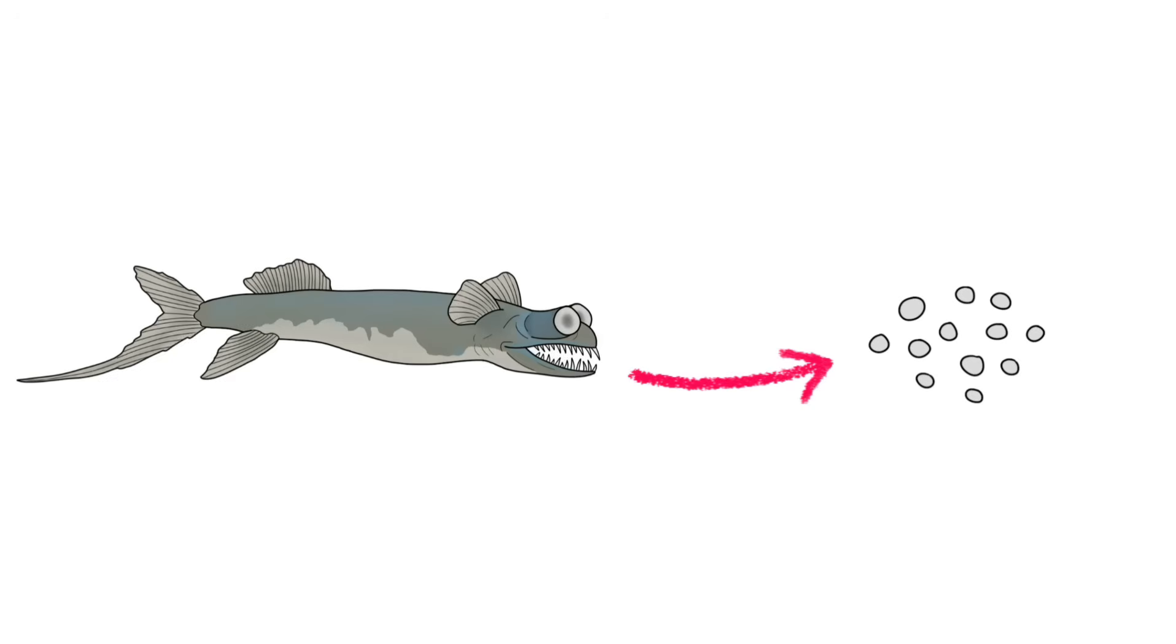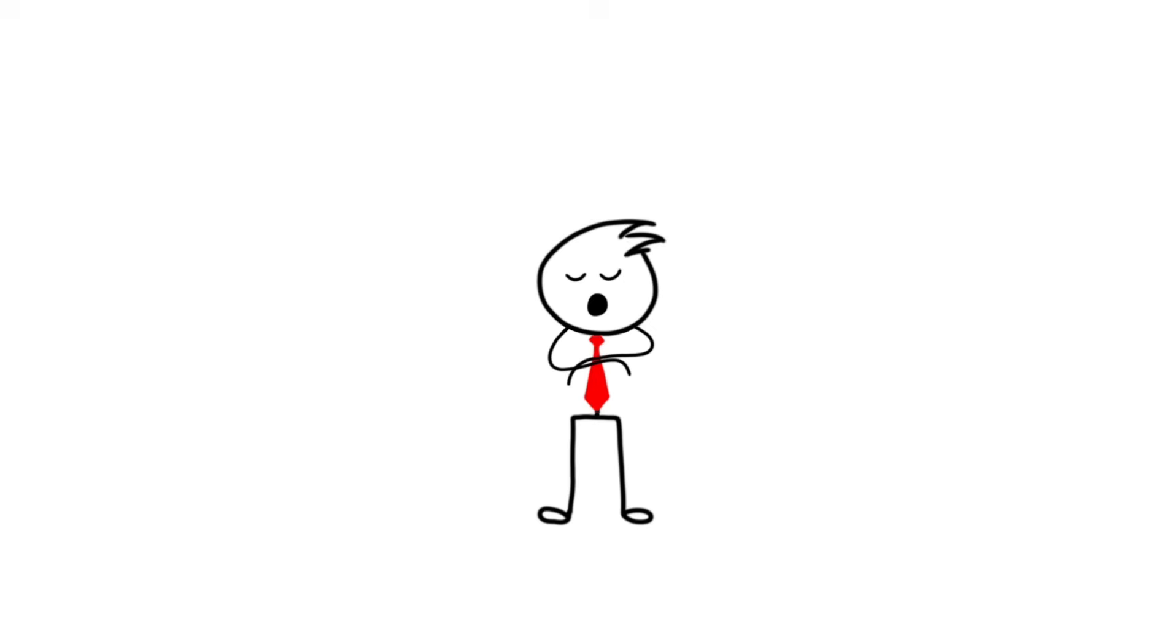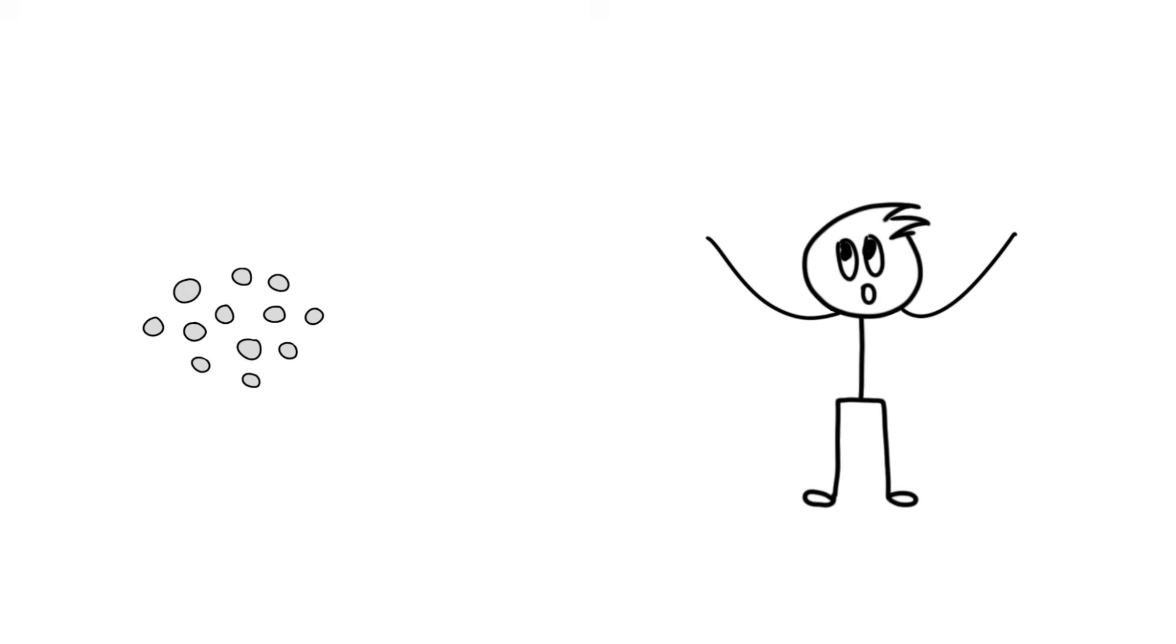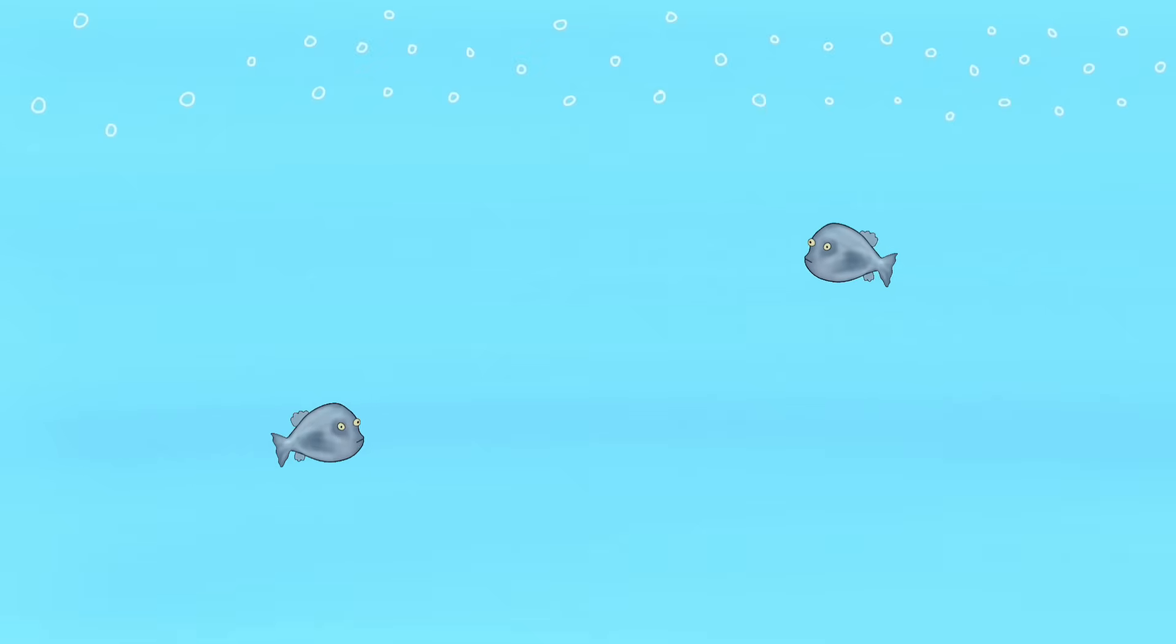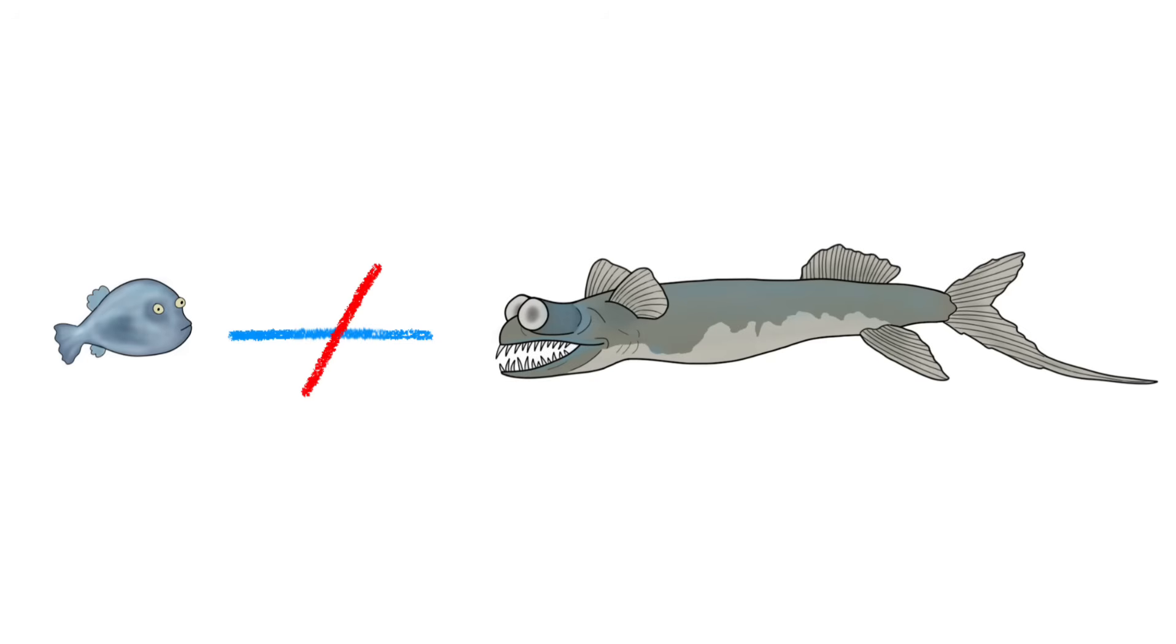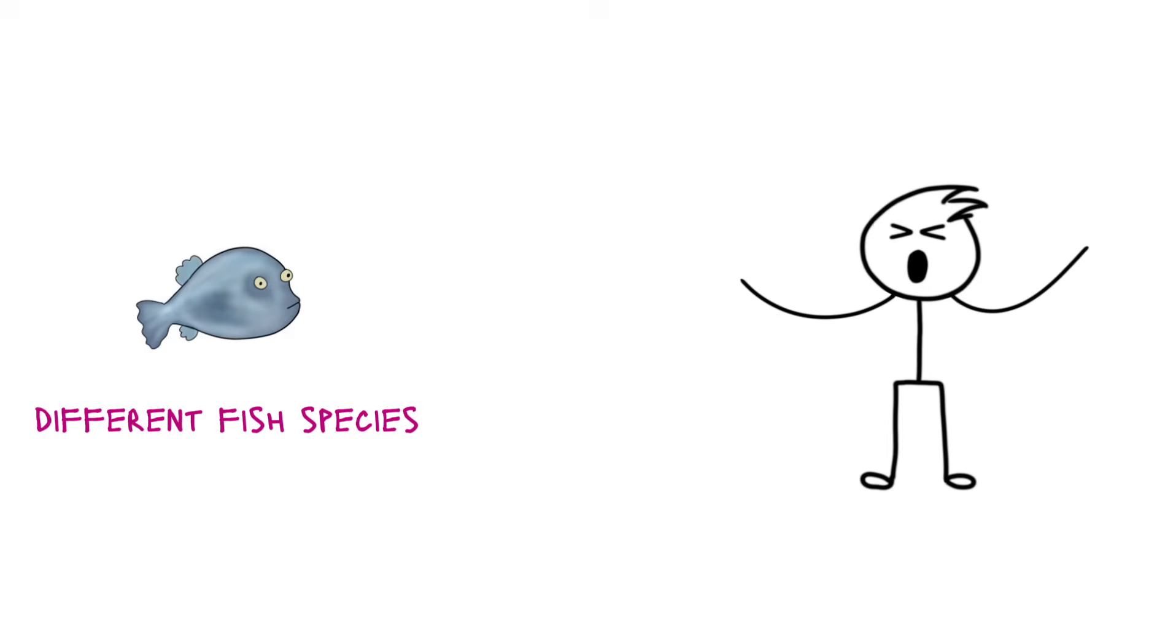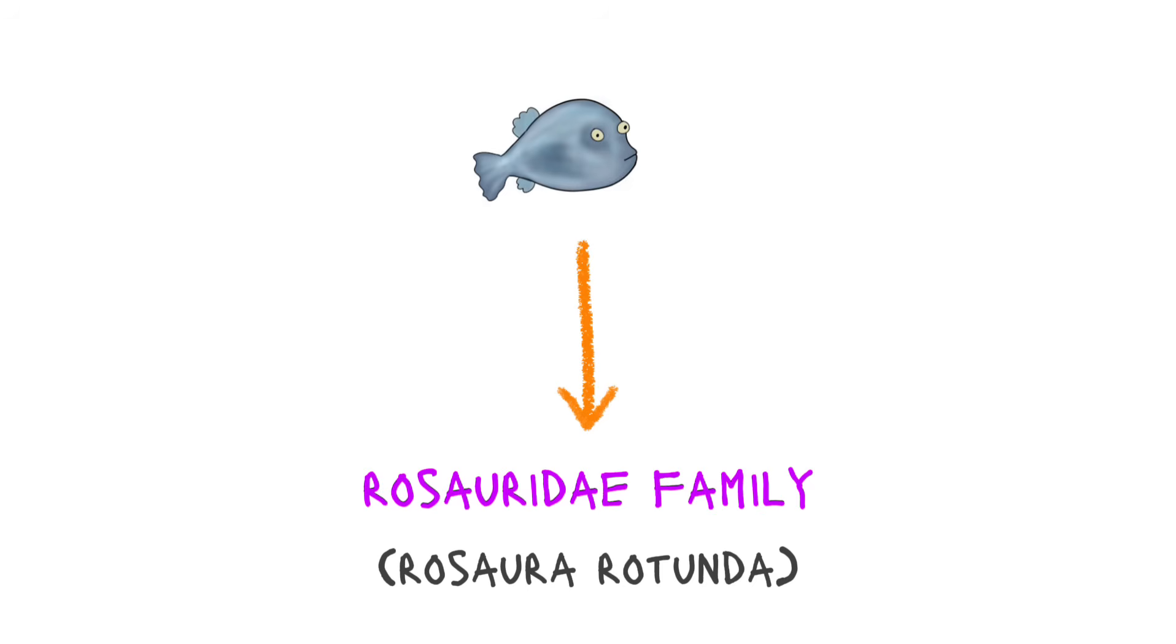When the adults lay eggs, the eggs float around the depth of 200 meters. The area is bright and food is everywhere. Even this egg is food for some other fish. So, most of the eggs are eaten and just a few hatch into larvae. The newly hatched larvae is transparent and roundish, and looks completely different from the adults. Even the scientists were confused for 80 years. They thought it was different fish species and kept them in Rosoridae family.